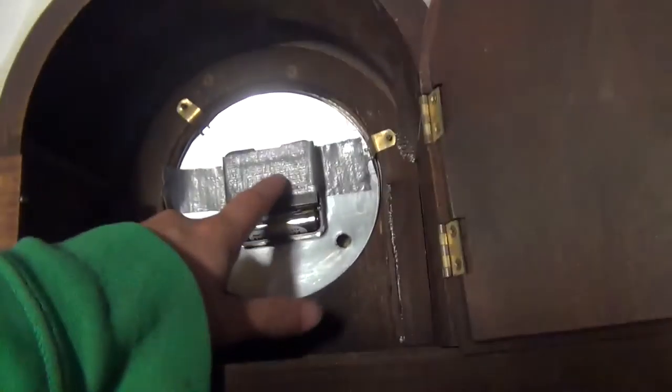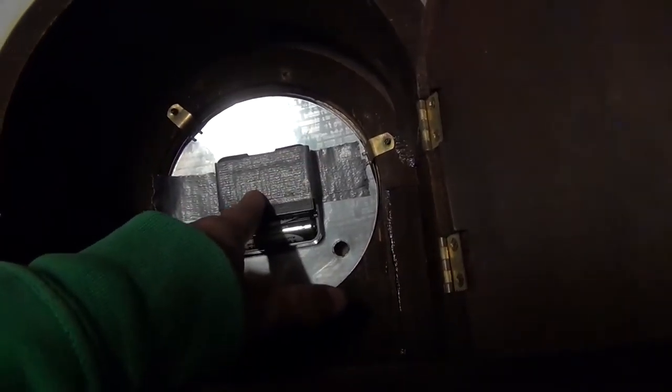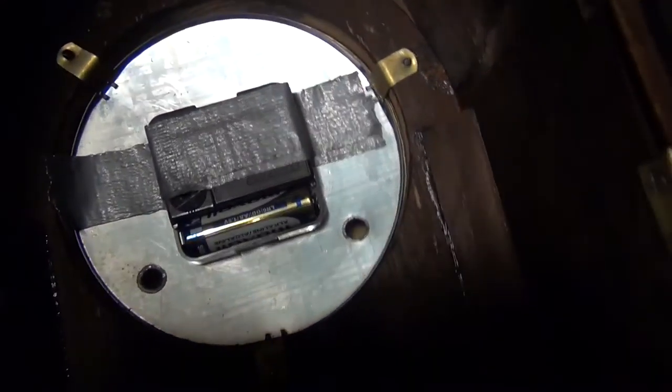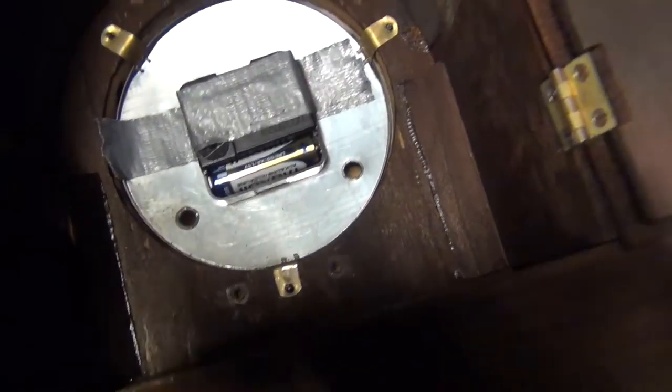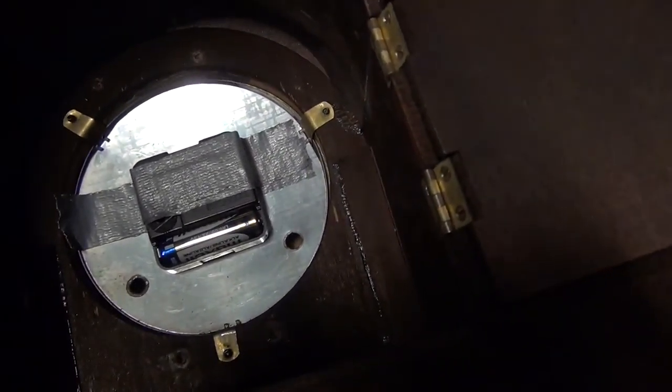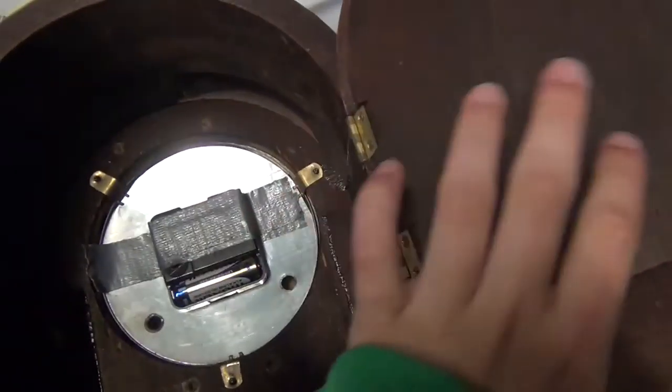Once I get velcro, this will be velcroed in, not duct taped. But I didn't get velcro, so it's just duct taped in. But that's just the back of a regular clock. How I did it was I just bought a cheap clock, took the back out, and then what I had to do with the hands...